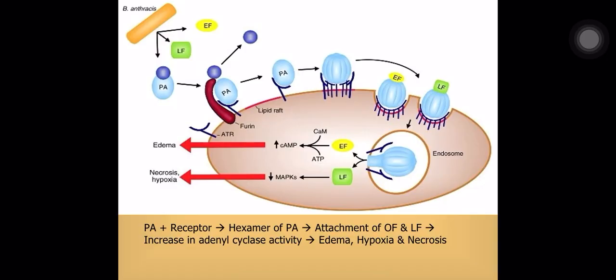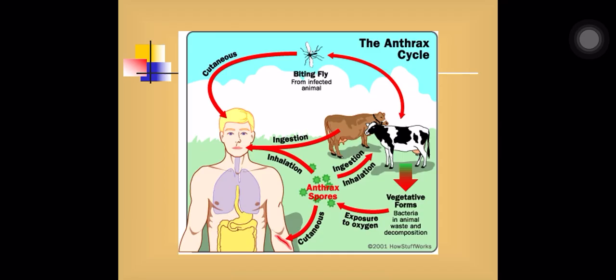The mechanism of action of anthrax toxin: the three portions — protective antigen factor, lethal factor, and edema factor — act on cells and lead to increased adenylyl cyclase activity, leading to edema, hypoxia, and necrosis. The cycle of anthrax carries on in nature among animals. Animals acquire this from the soil, and human beings acquire it accidentally when in contact with animals, either by ingestion, inoculation, or inhalation.